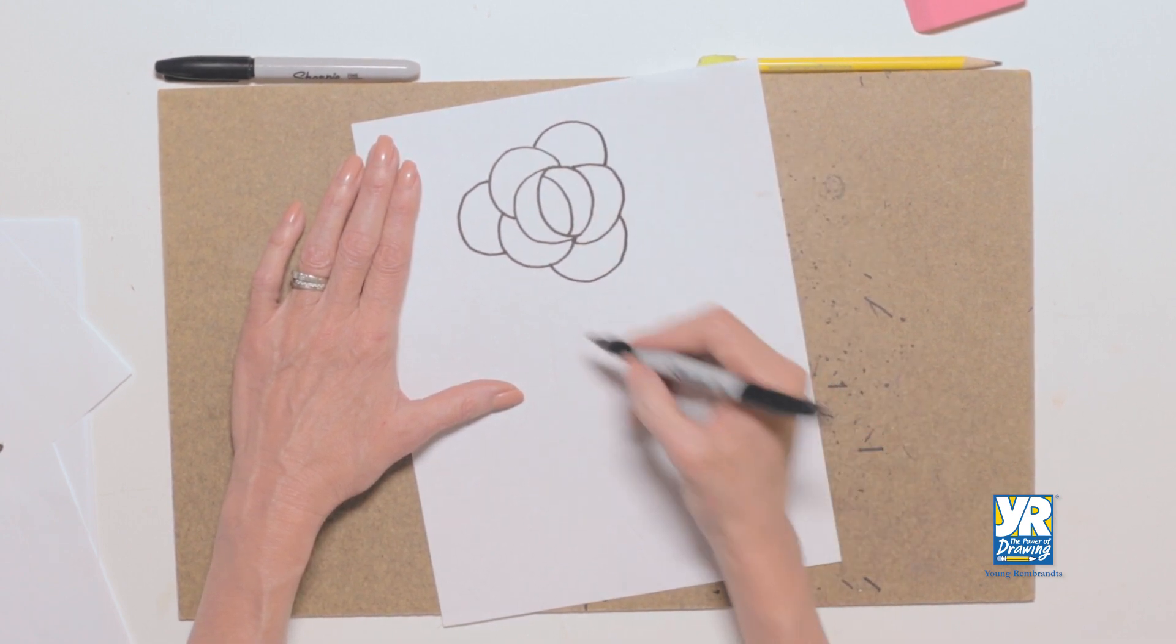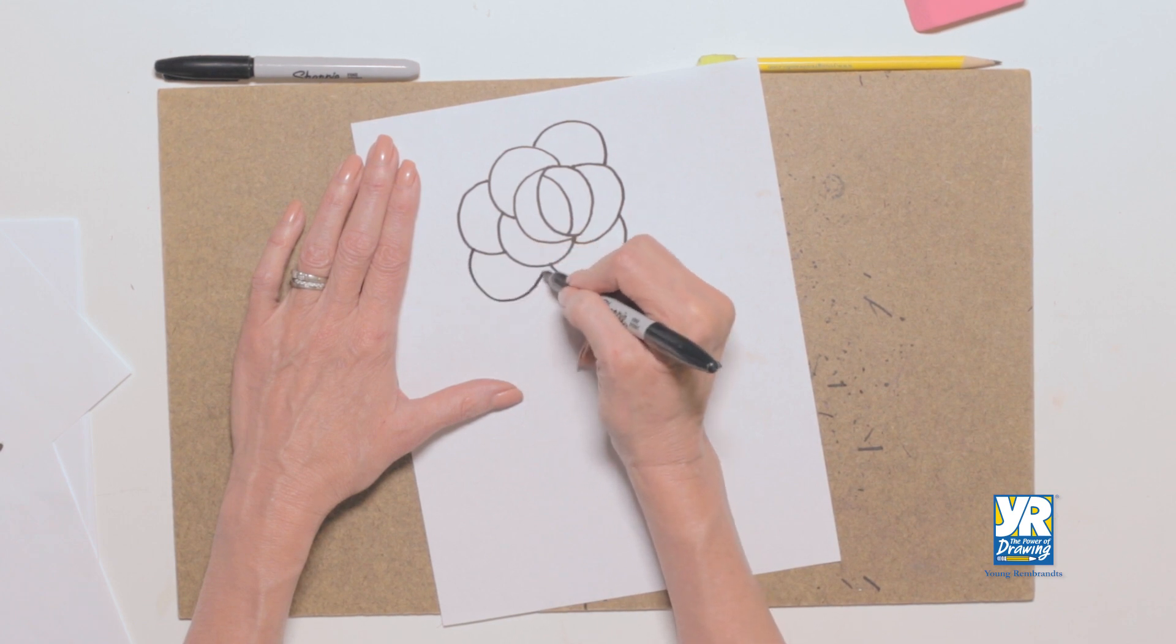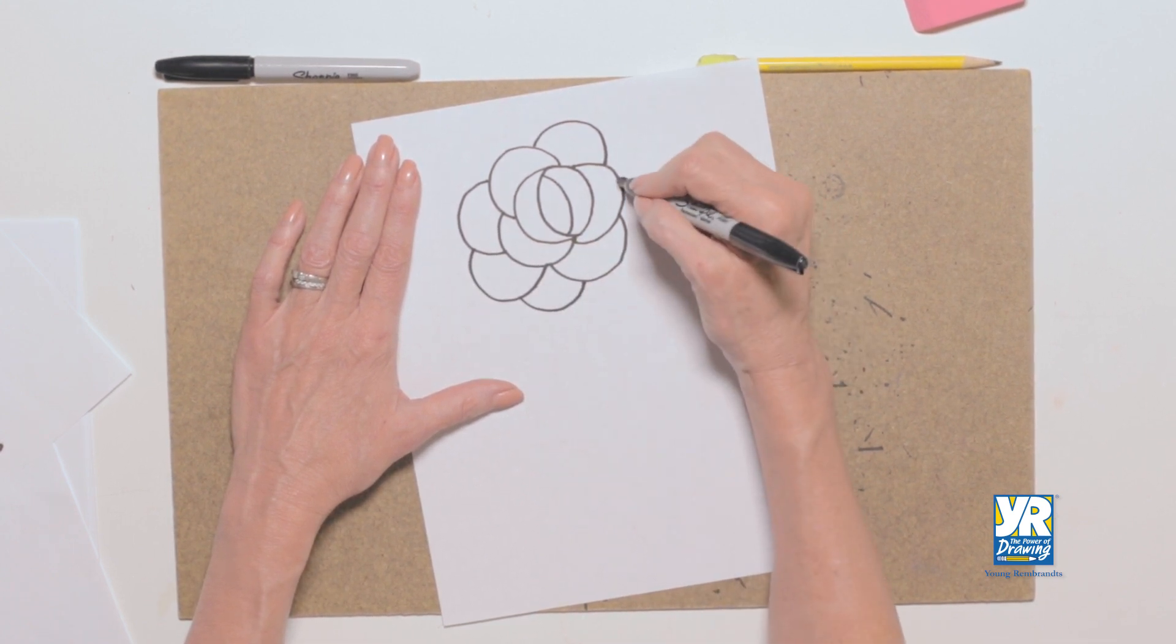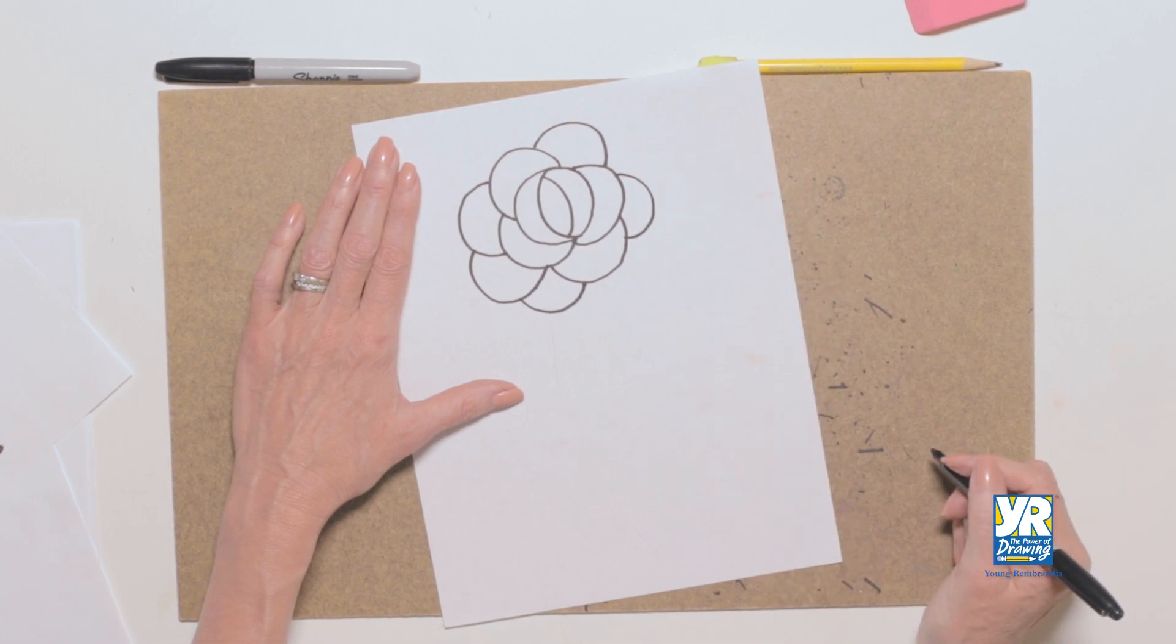Okay, we need three more now to finish him off. One. Two. And I'm gonna put one more over here to balance him out. Three. There's our rose.